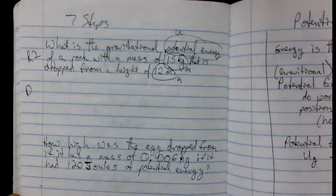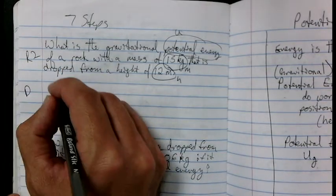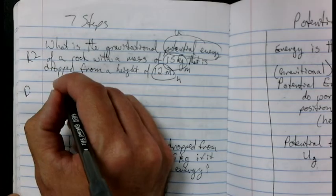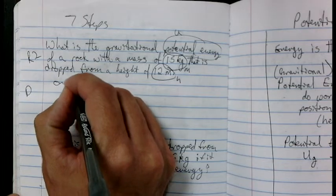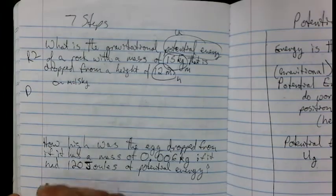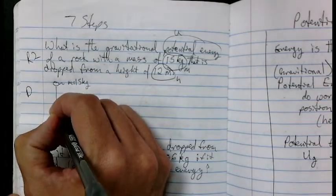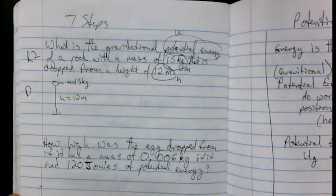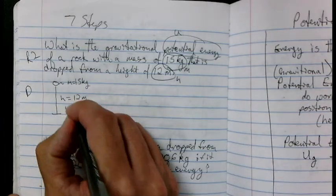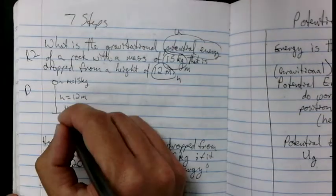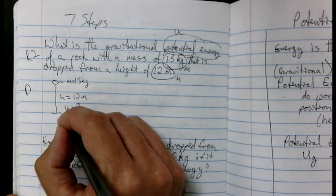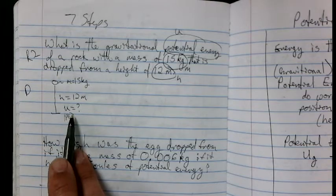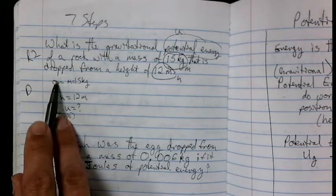Now I'm going to draw twice. I'm going to draw the story of the word problem. So we have an object, a rock, with a mass of 15 kilograms, and it's going to be dropped from a height of 12 meters. And we're looking for U. Or you could also say PE. Either one. So I drew the picture. The object's going to fall. I labeled my picture, so I drew twice.